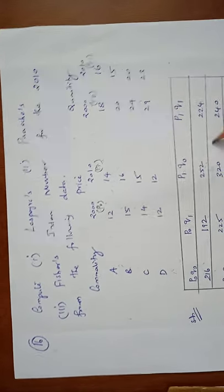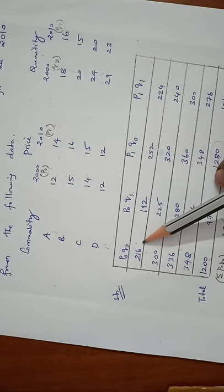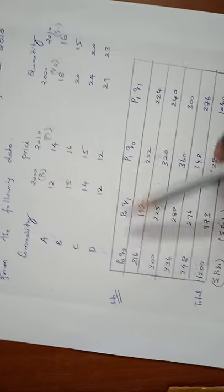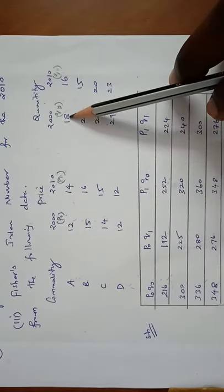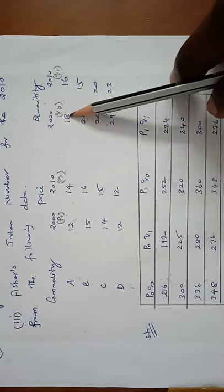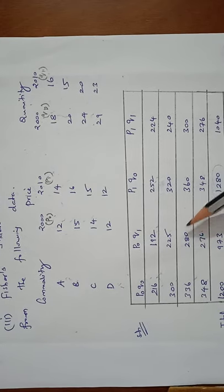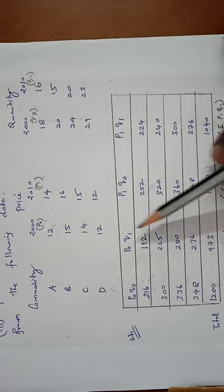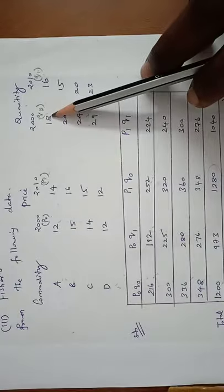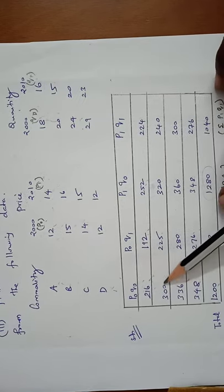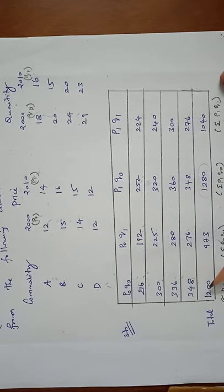First we have to find P0Q0. Multiply base year price and base year quantity. 12 into 18 is 216, 15 into 15 is 225, then 280, 276, 300, 6 into 6 is 36, and 348. Adding all the values: 1200.